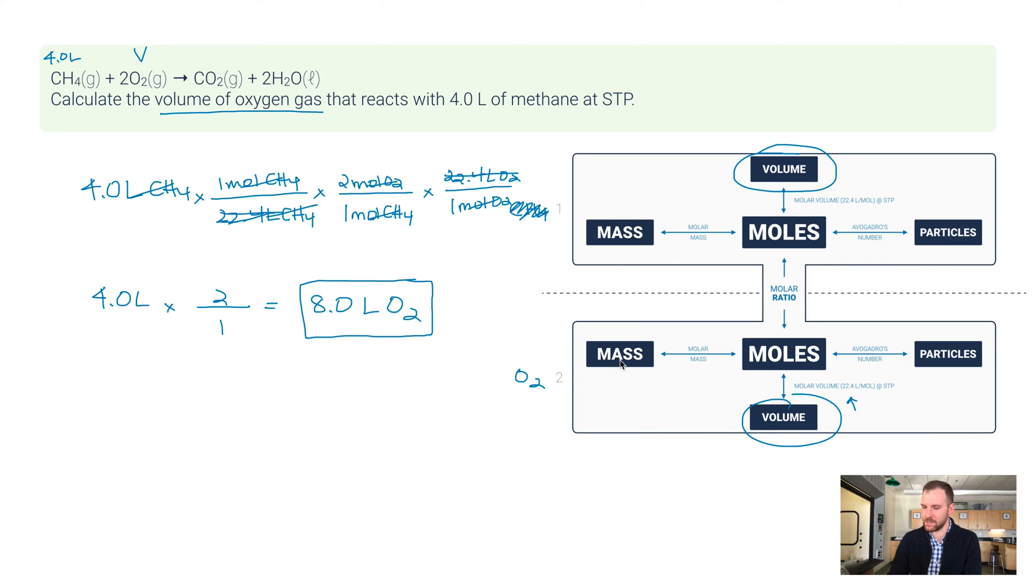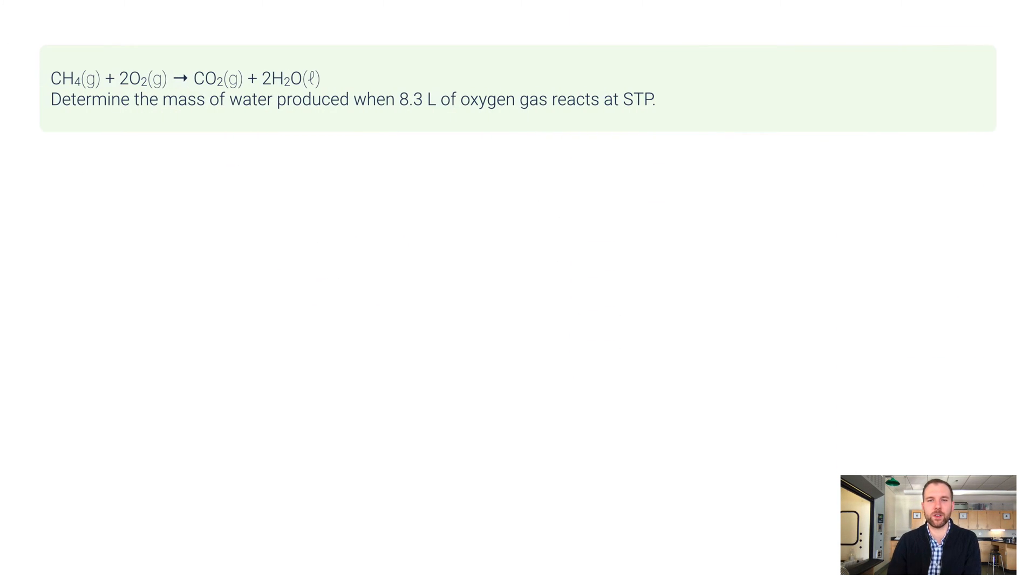But what if I wasn't going volume to volume? What if I went from mass to volume or volume to mass? That's going to change things a little bit. Here's another example problem. Same equation: determine the mass of water produced when 8.3 liters of oxygen gas reacts. 8.3 liters of that goes in and we want to figure out what mass of water is produced.